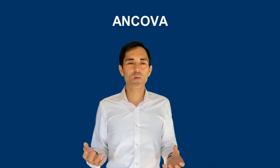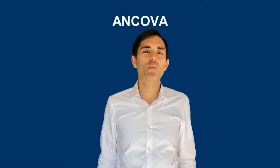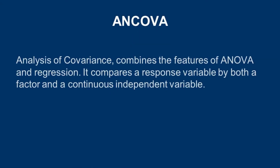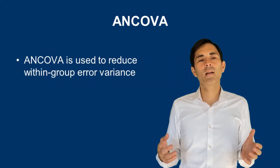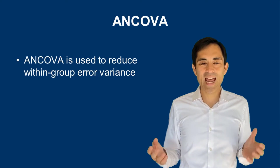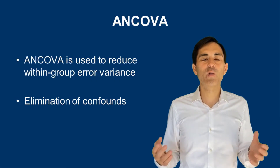We can add these confounding variables into our analysis. ANCOVA, or analysis of covariance, combines the features of ANOVA and regression. So simultaneously, you can enter as independent variables a categorical variable — so grouping variables — and continuous independent variables. It has the huge advantage that ANCOVA can reduce within-group variance and can eliminate confounds, or what we call omitted variable bias.